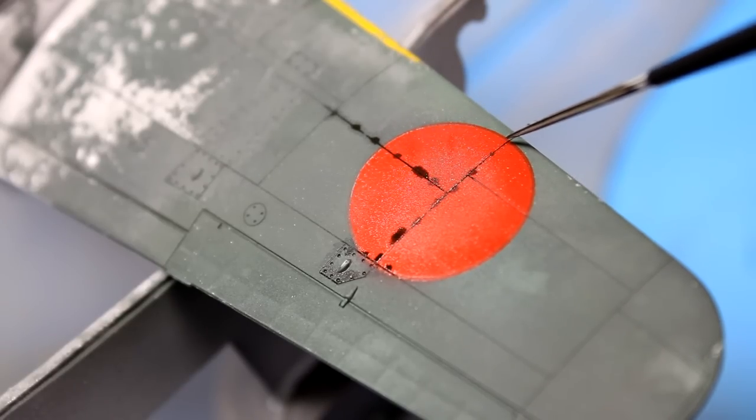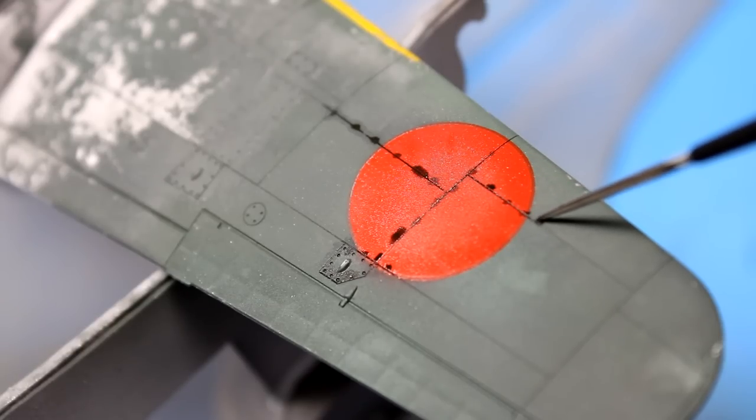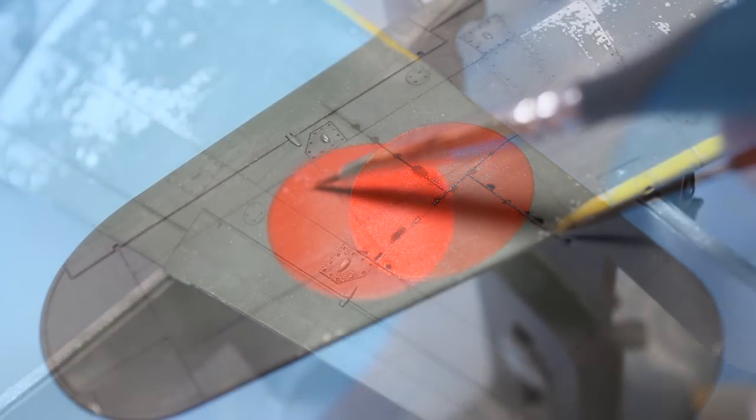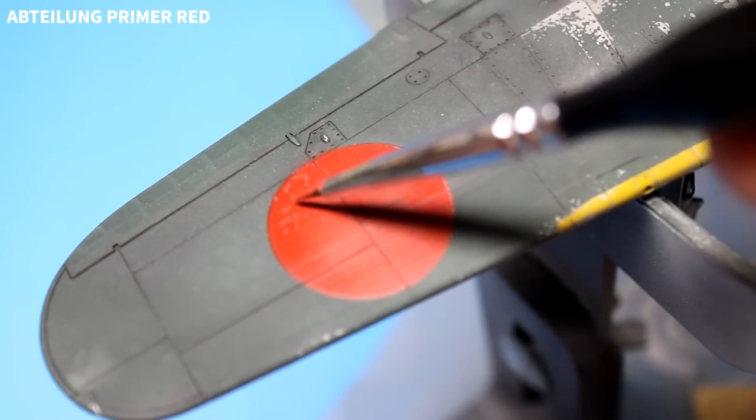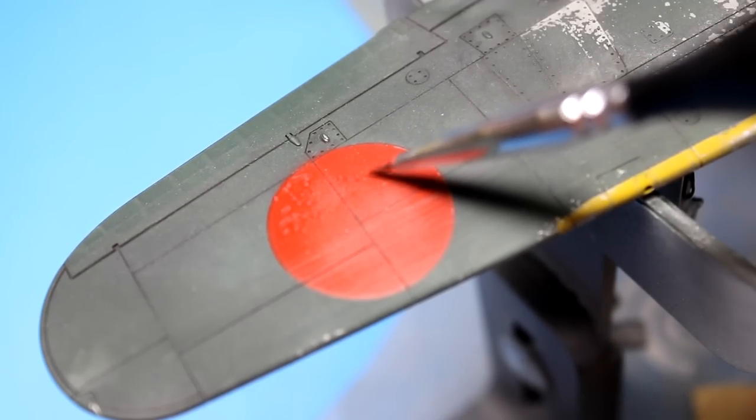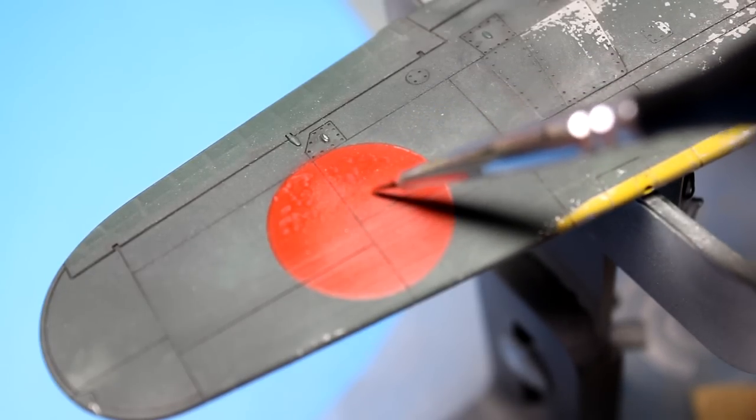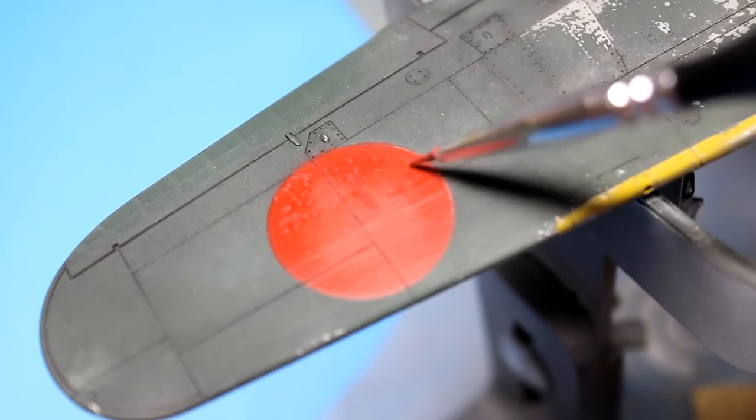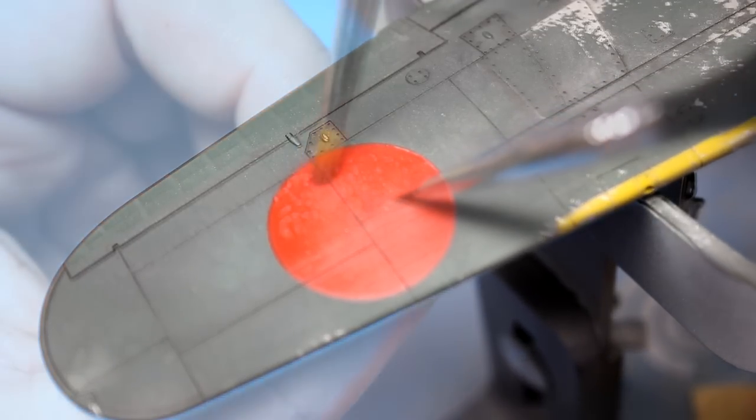Before moving into oils, I like putting down a pin wash, because that helps break the model down into smaller, more manageable areas. And instead of trying to do oils everywhere at once, you can pretty much do one panel at a time. Oils are still one of the most powerful paints you can use on a model. By using different thicknesses, thinning it down, and using different brushes, you can really play with what's going on in the paint.